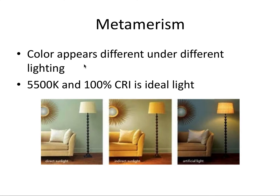The first is metamerism, which is the phenomenon that color appears different under different lighting. In other words, the same object can appear different colors under different lights. This image shows the same objects in direct sunlight, indirect sunlight, and artificial light — and the same thing happens when we're shade matching crowns. The actual color of the natural teeth and of the crown we're selecting can be vastly different depending on the light we're using to illuminate the oral cavity.